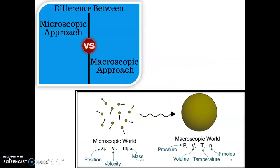Thermodynamic concepts are divided into two approaches. The first approach is the microscopic approach and the second is the macroscopic approach. The macroscopic approach deals with the measurement of actual physical parameters, while the microscopic approach does not deal with the measurement of actual physical parameters. Macro means large and micro means very, very small.